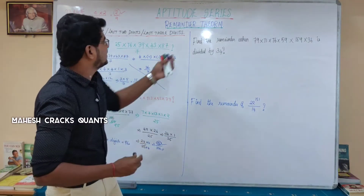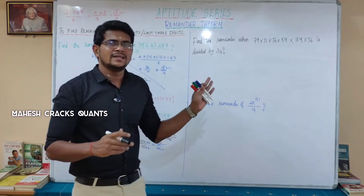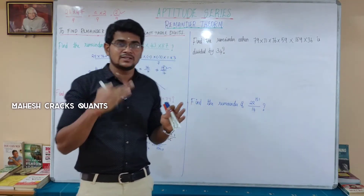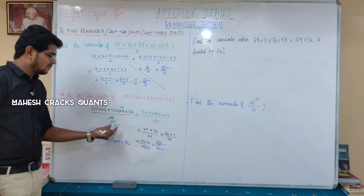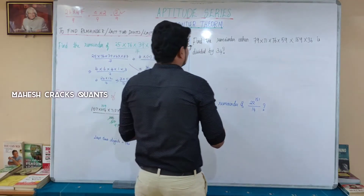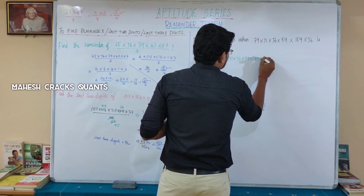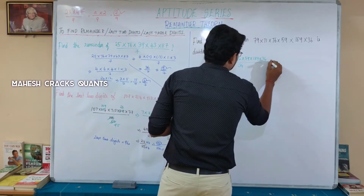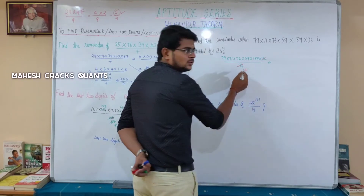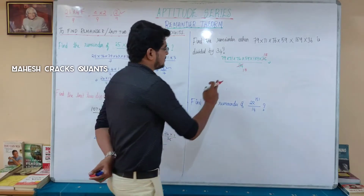Let's move on to the next question. Find the remainder when 79 into 71 into 76 into 59 into 189 into 36 is divided by 34. We find the denominator — 34 is 17 times 2 and 36 is 18 times 2. So we can cancel the factor of 2 and work with 17 as the divisor in a reduced step.